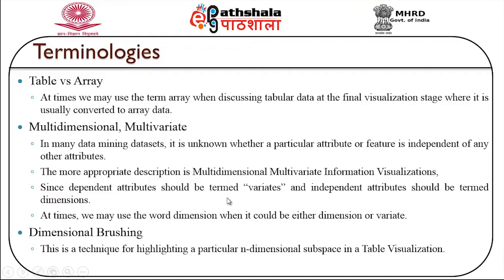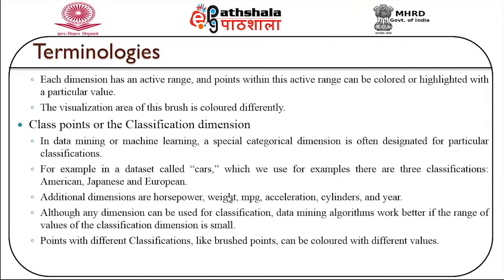Dimensional brushing is a technique for highlighting a particular n-dimensional subspace in a table visualization. Each dimension has an active range, and points within this active range can be colored or highlighted. The visualization area of this brush is colored differently. Class points are the classification dimension — in data mining or machine learning, a special categorical dimension is often designated for classification. For example, in a cars dataset there are three classifications: American, Japanese and European, with additional dimensions such as horsepower, weight, MPG, acceleration, cylinders and year.